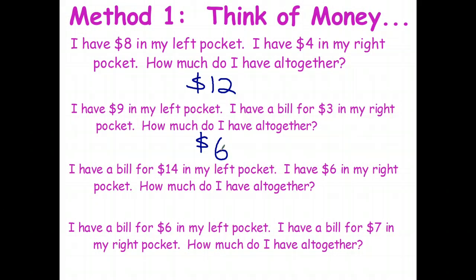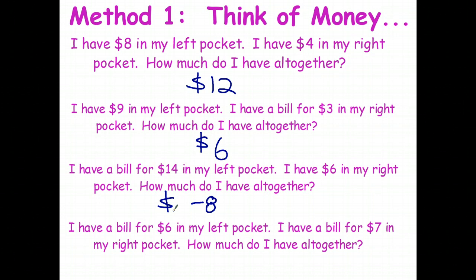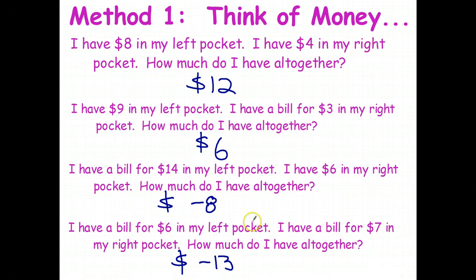If I've got a bill for fourteen dollars in my left pocket and six dollars in my right pocket, I don't have enough to completely pay the bill. Starting at negative fourteen and paying off six dollars, I still owe eight dollars — so the answer is negative eight. For the last example, a bill for six dollars and another bill for seven dollars means altogether I have a debt of thirteen dollars, so the answer is negative thirteen.